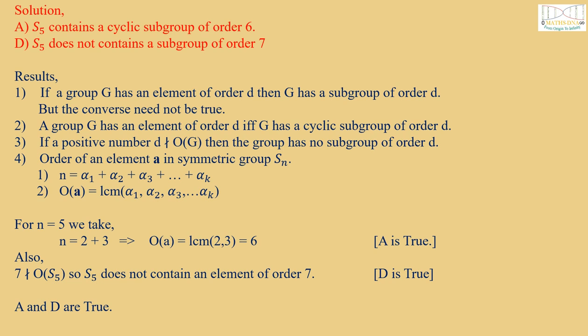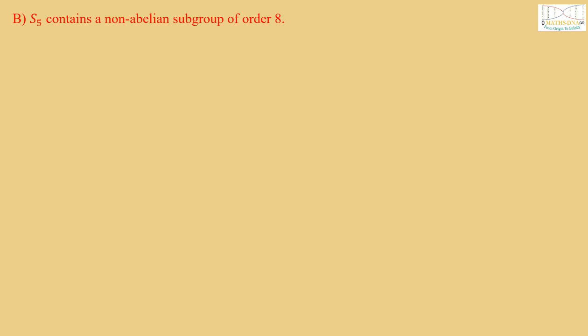Remember, we have to find the false one. For option B, S5 contains a non-abelian subgroup of order 8. And option C, S5 does not contain a subgroup isomorphic to Z over 2Z cross Z over 2Z.